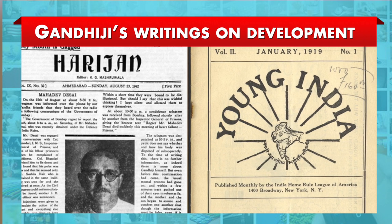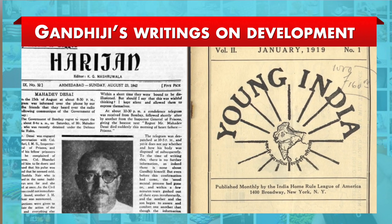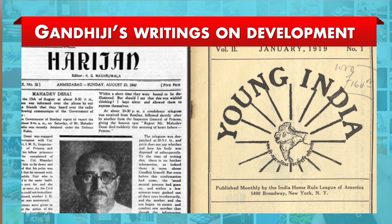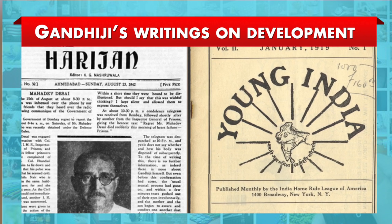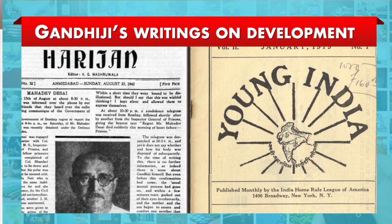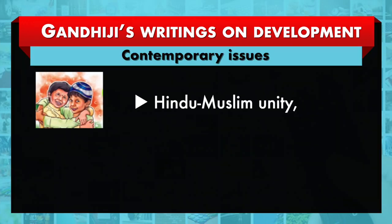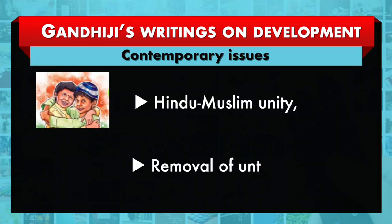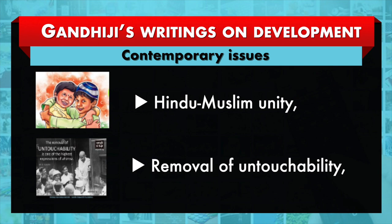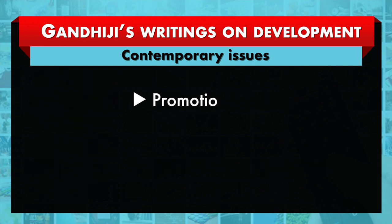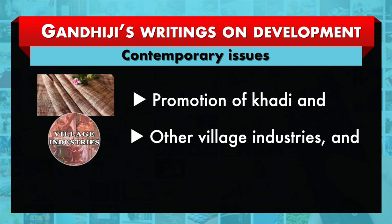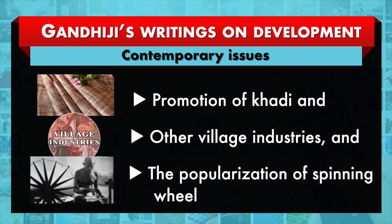One example is Gandhi's writing in his journals, Young India and Harijan. He profusely wrote on contemporary issues such as Hindu-Muslim unity, removal of untouchability, prohibition, promotion of khadi and other village industries, and the popularization of the spinning wheel as a means of supplementing the income of the semi-starved and unemployed village peasants in India.